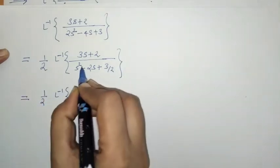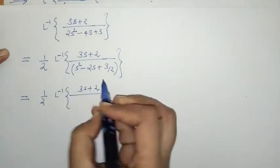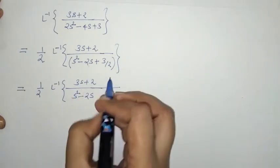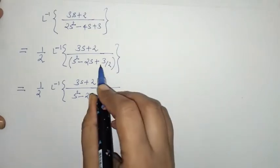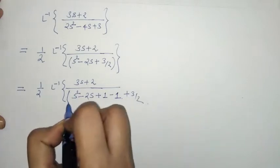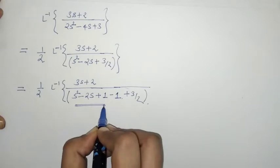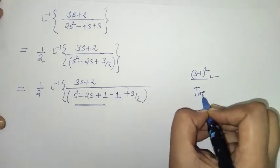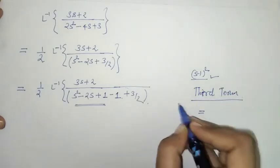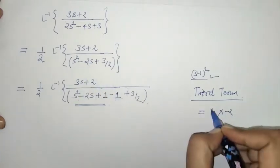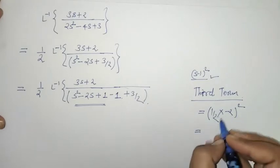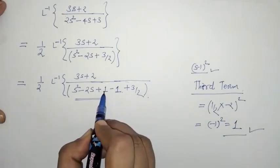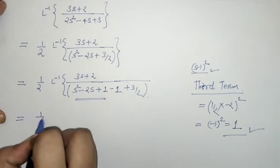Now we make a perfect square for this quadratic factor. We adjust by adding and subtracting 1: the third term is (1/2 × coefficient of s)² = (1/2 × −2)² = (−1)² = 1. So we add +1 − 1, making the denominator (s − 1)² + (3/2 − 1) = (s − 1)² + 1/2.